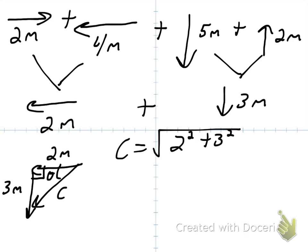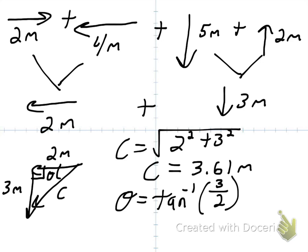So to get c, the hypotenuse, we do Pythagorean theorem again. So c equals the square root of 2 squared plus 3 squared, which gives us 3.61 meters. And remember, we're not done because we need a direction. It's a vector. So theta is equal to tangent inverse of the opposite, 3, over the adjacent, 2, which gives us 56.3 degrees.